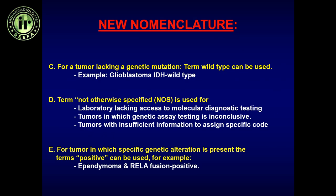If the tumor lacks a genetic mutation, it is called wild type. So if no genetic mutation is found associated with a GBM, you call it glioblastoma IDH wild type. If testing cannot be done or results are non-conclusive, you call it not otherwise specified — for example, oligodendroglioma NOS. Additionally, some genetic marker alterations are reported as positive or negative, such as an ependymoma being RELA fusion positive or negative. That covers the new nomenclature.